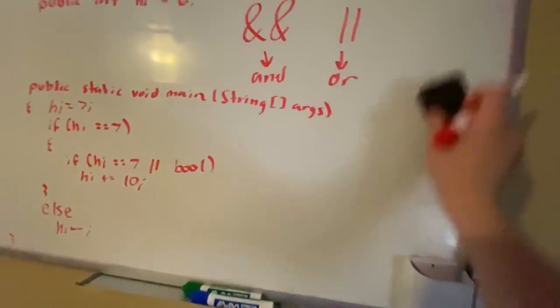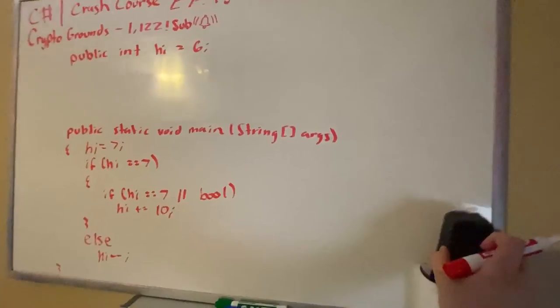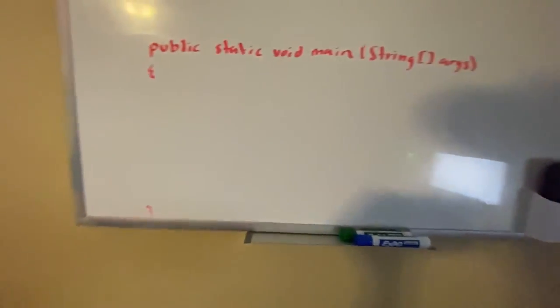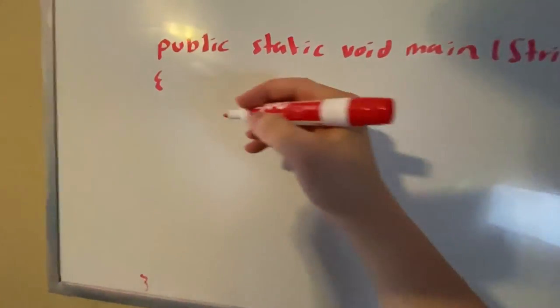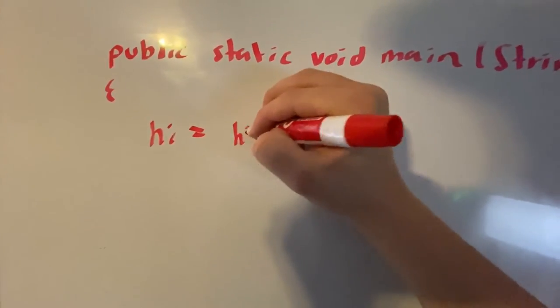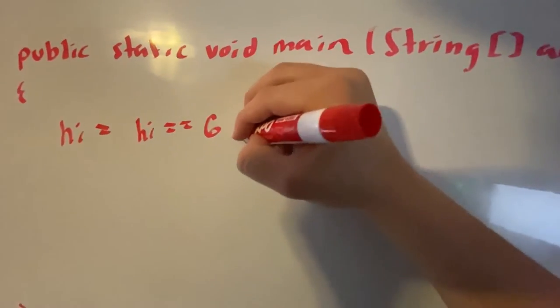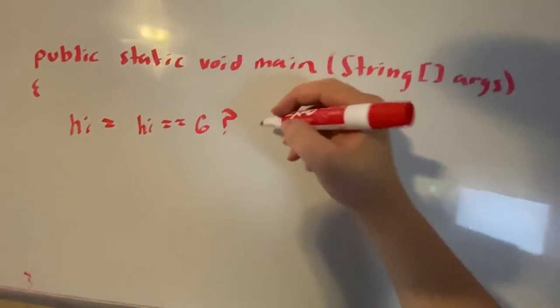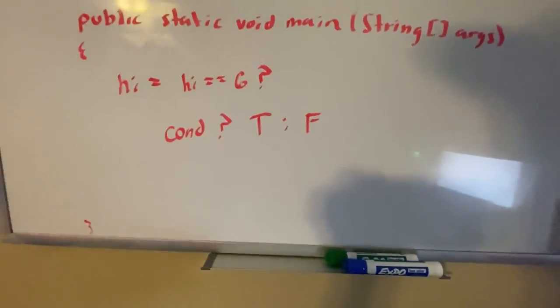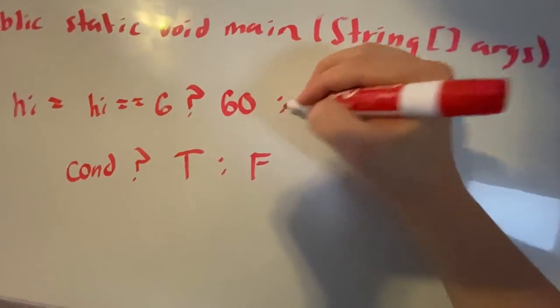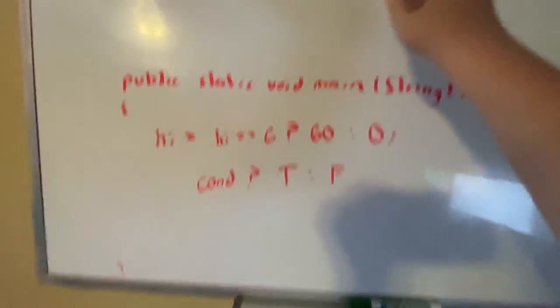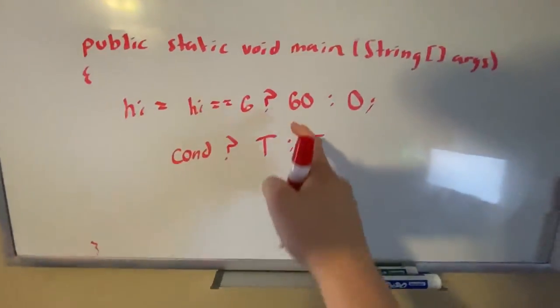Another thing I want to mention is the question mark operator. Let's say we set hi equal to if hi is equal to 6, we can put a question mark. The question mark is we have the condition, question mark, and the output is true or false. If it's true 60, and if it's false then we're going to set it to 0. Since it's 6, it's going to set it to 60. However, if this is 7, then it's going to set it to 0 because it's false.